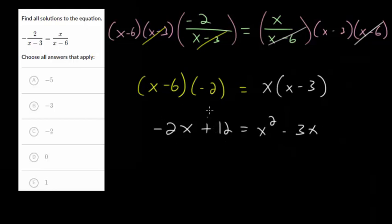Let's set this side equal to 0. So we can add 2x to each side and subtract 12. And when we do that, we get 0 is x squared minus x minus 12. And this will be factorable.